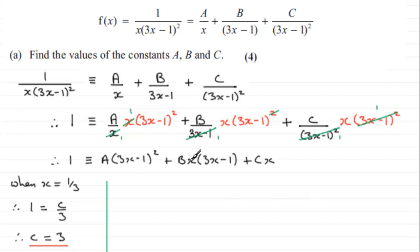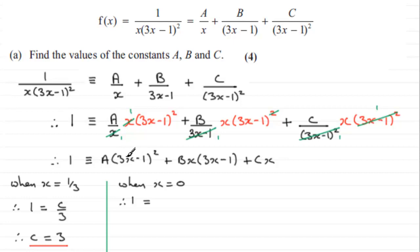Next, choose x equals zero to eliminate other terms. The b term becomes b times zero times (minus 1) which is zero, and the c term is c times zero which also goes. We're left with 1 equals a times (3 times 0 minus 1) squared, which is a times (minus 1) squared, which equals a times 1. Therefore a equals 1.